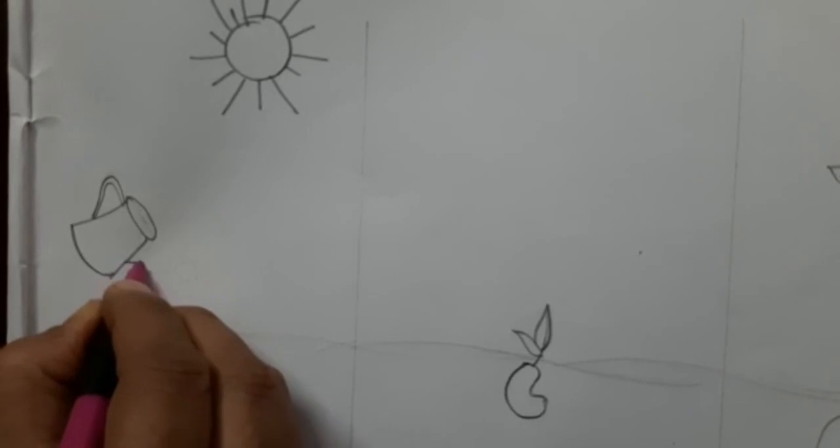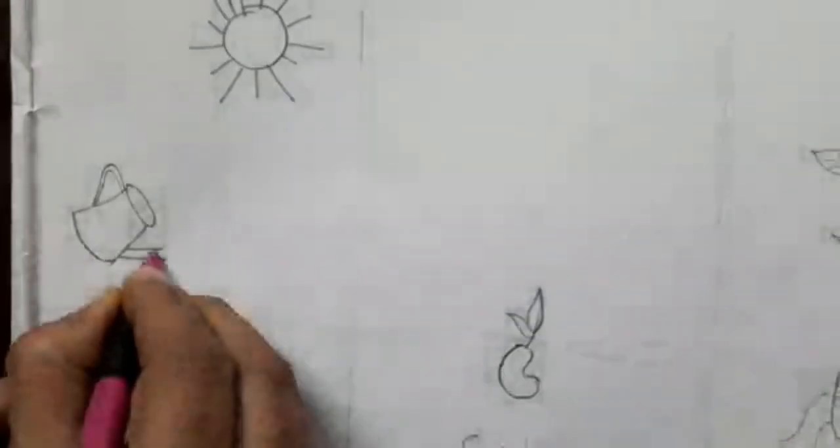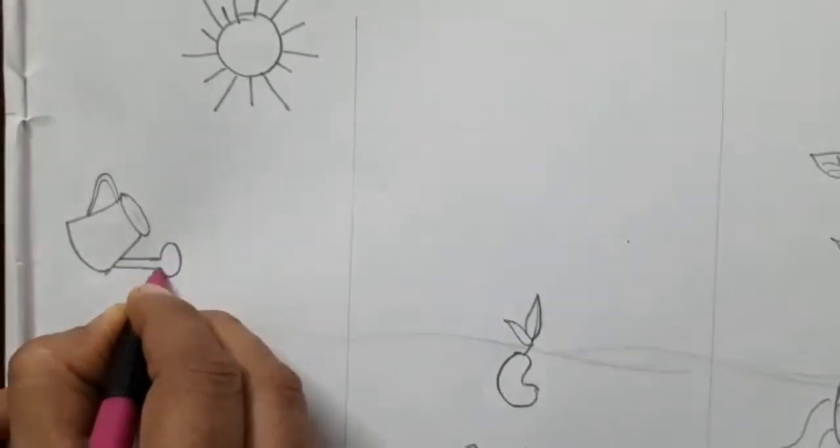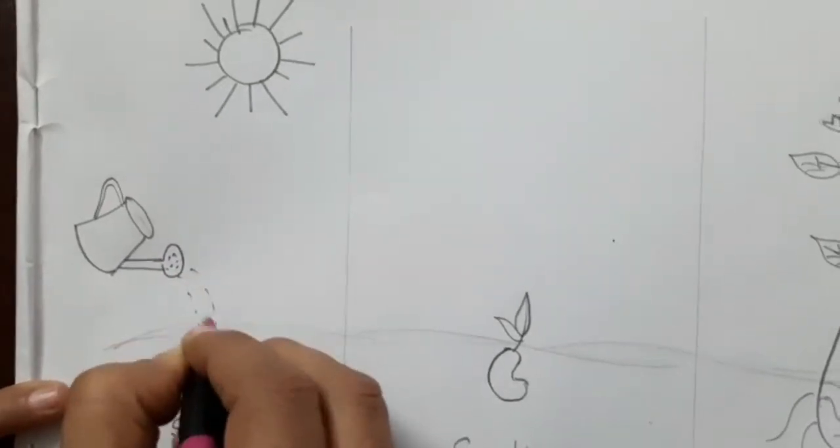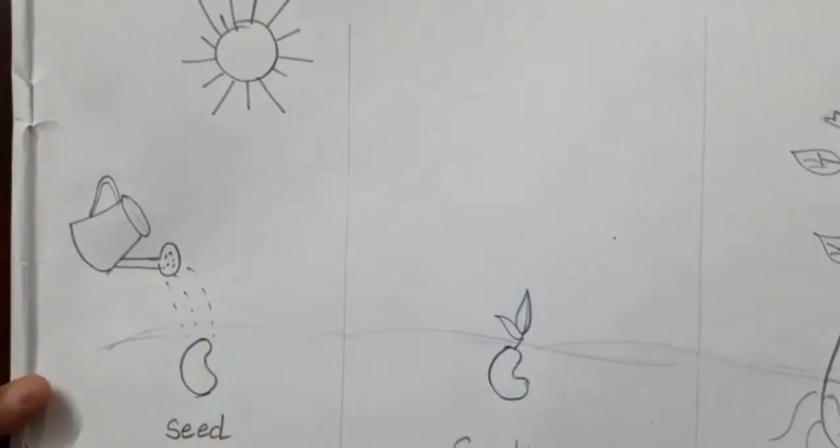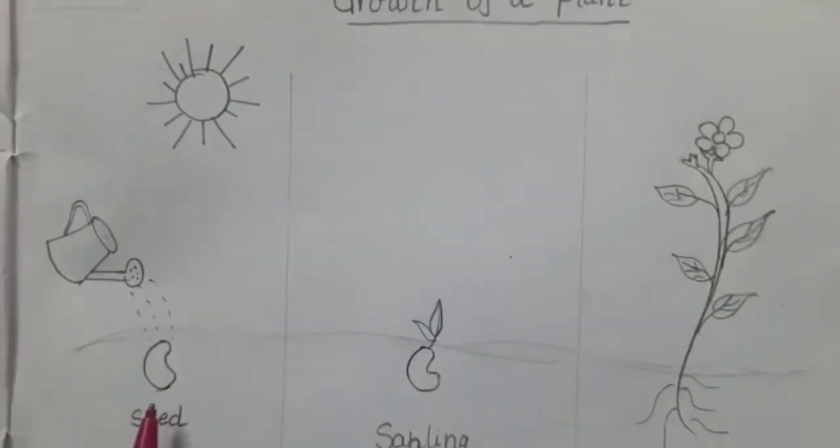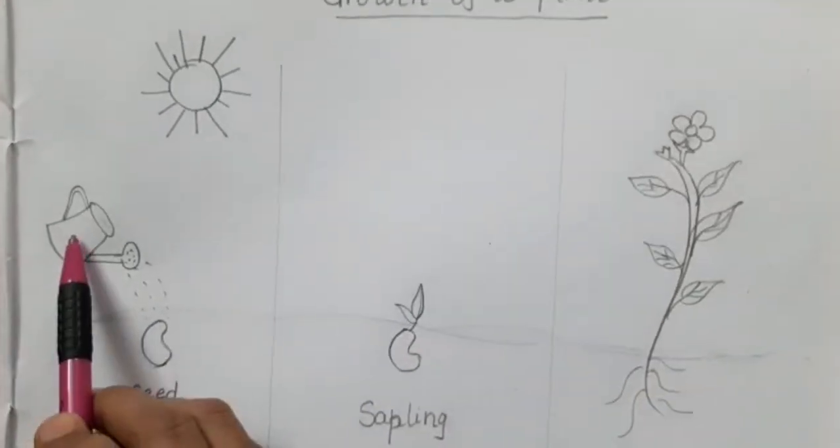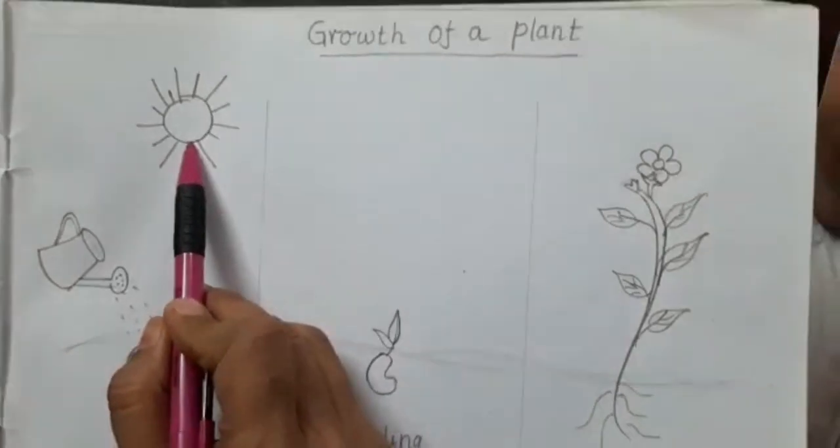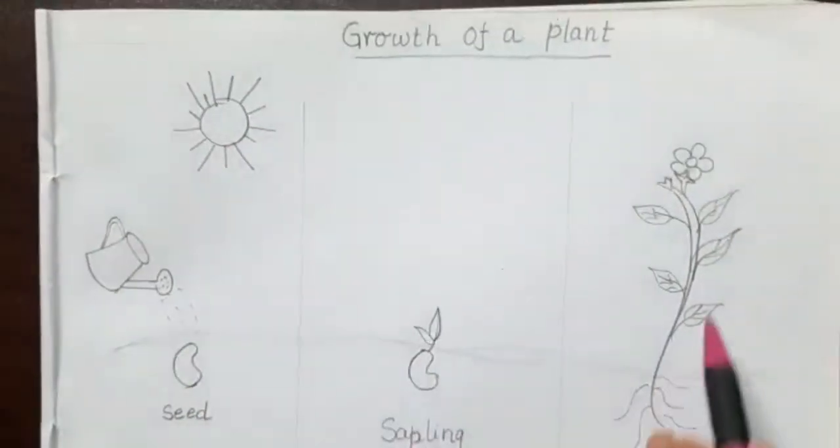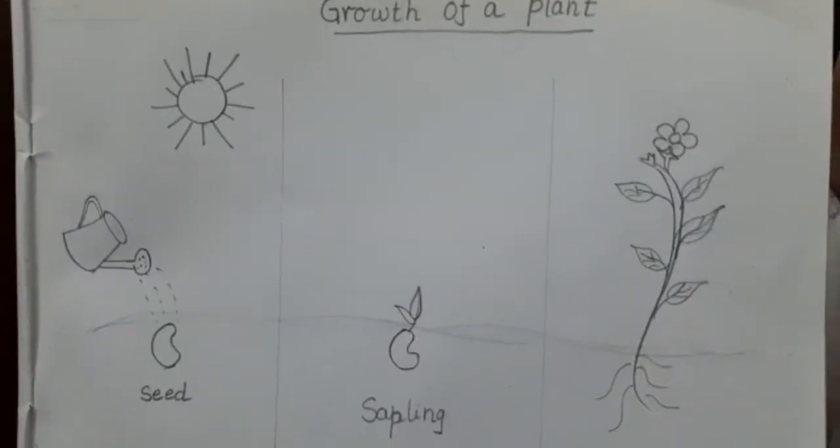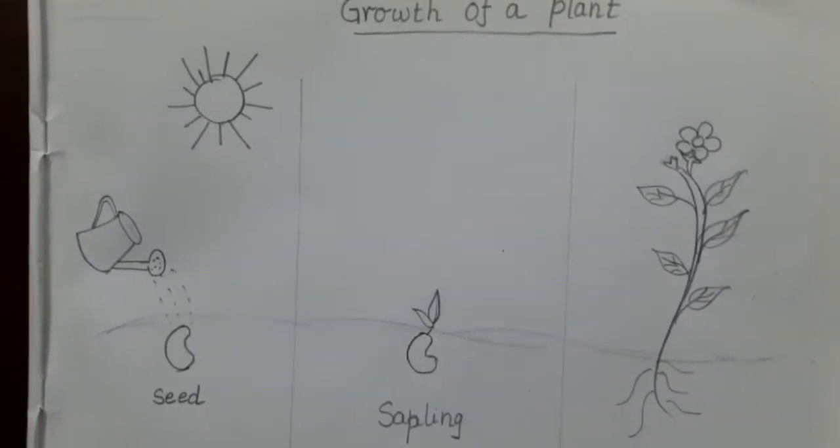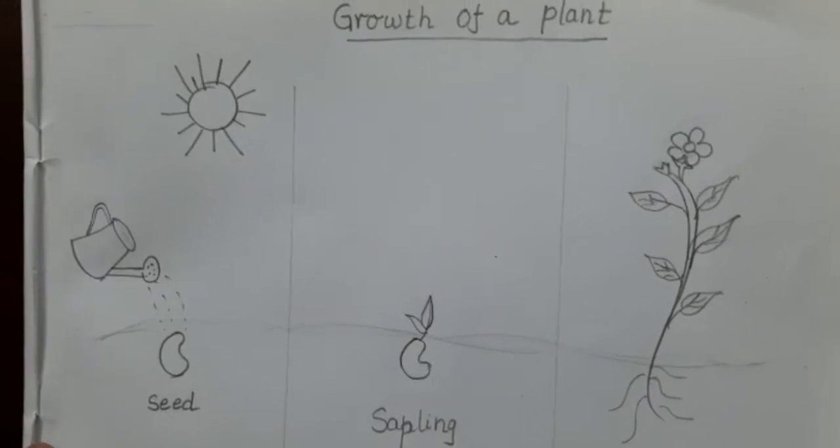Now here, from here the water will come out. And here, water. So a seed needs water, sunlight, and air to grow into a plant. So this way we are going to draw the growth of a plant. If you wish, you can color this image also.